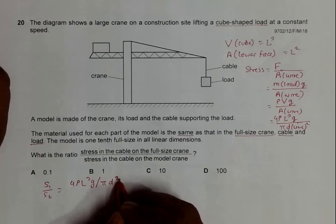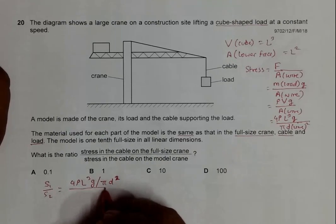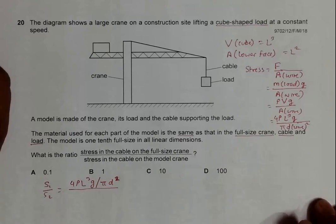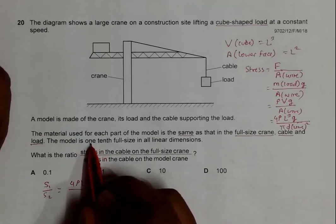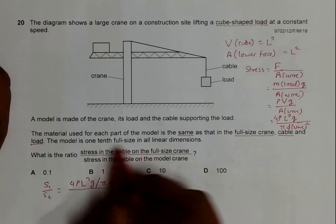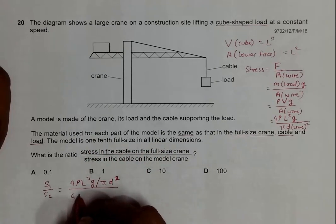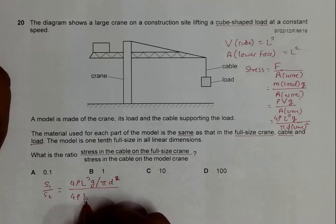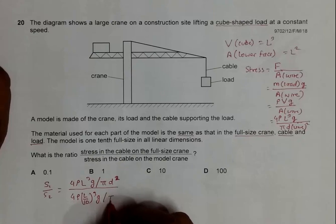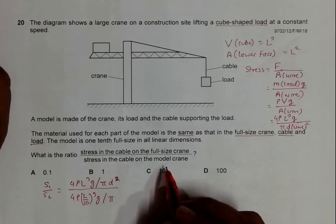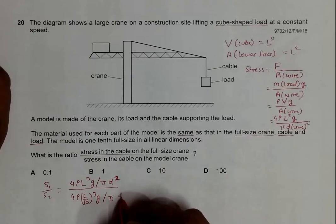For the model crane, we said all linear dimensions are 1/10. So we have 4ρ(L/10)³g divided by π(d/10)².